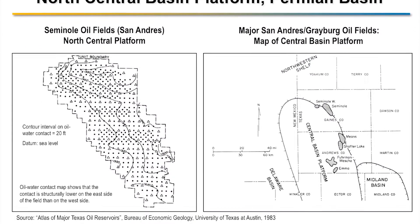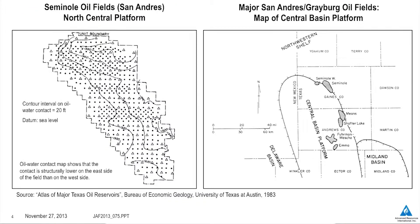Can you give us an example of an oil field that has been identified to have a tilted oil-water contact? A classic one is the Seminole oil field. What we see is a gradient of about 20 feet that exists from one edge of the field to the other, and the continuation of that tilt across the field. That's just one example of the major fields in the Central Basin Platform — Means and Shafter Lake are other fields that have those kinds of tilted water-oil contacts.